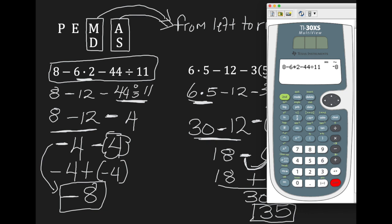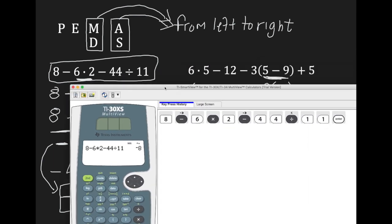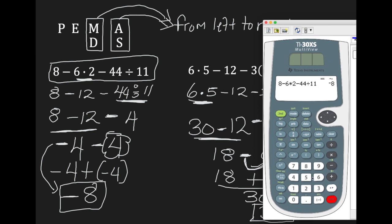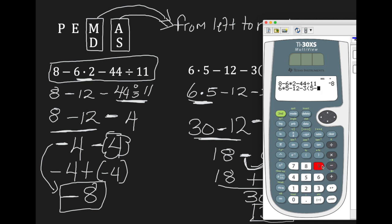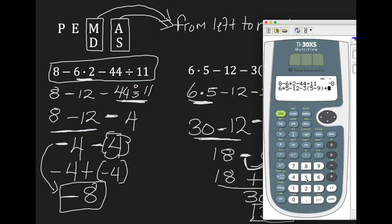For the second integer example: 6 times 5 minus 12, take away, then 3, then open parenthesis, 5 take away 9, close the parenthesis, and the last one was plus 5. Hit enter and there's our answer of 35.